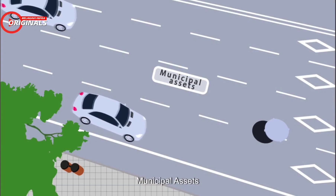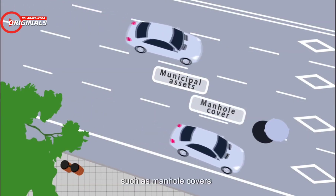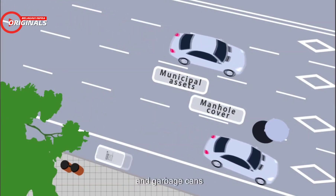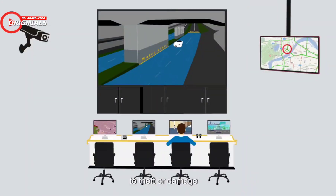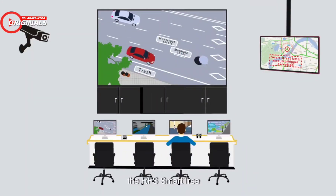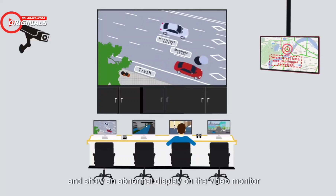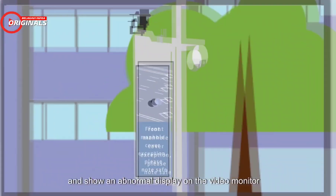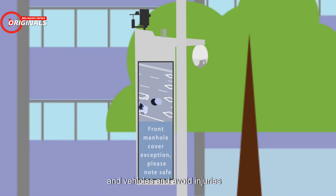Municipal assets. When municipal assets such as manhole covers and garbage cans have been disturbed due to theft or damage, the RFS SmartTree can simultaneously notify the monitoring center and show an abnormal display on the video monitor to remind pedestrians and vehicles to avoid injuries.